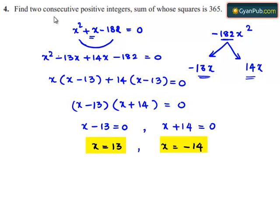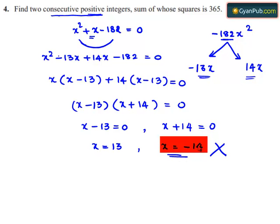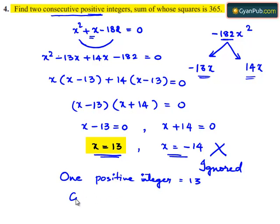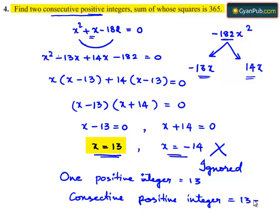In the question, we need to find two consecutive positive integers. But here we got x equals minus 14, which is not a positive integer, so x equals minus 14 can be ignored. Taking x equals 13, one positive integer is 13. The consecutive positive integer is x plus 1, which is 13 plus 1, which is 14. So the two consecutive positive integers are 13 and 14.